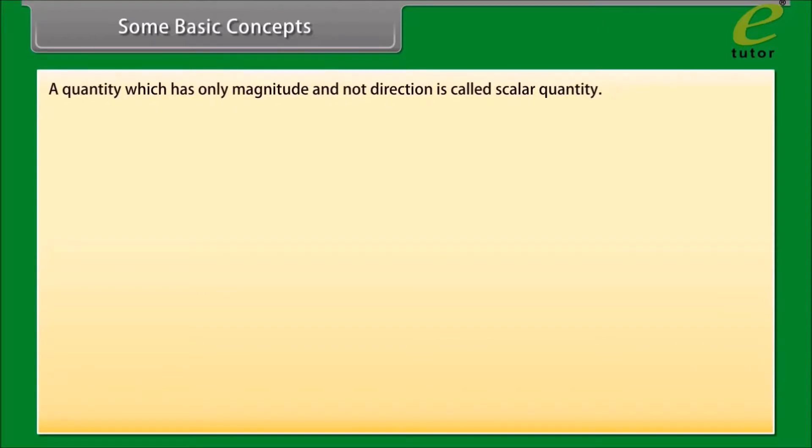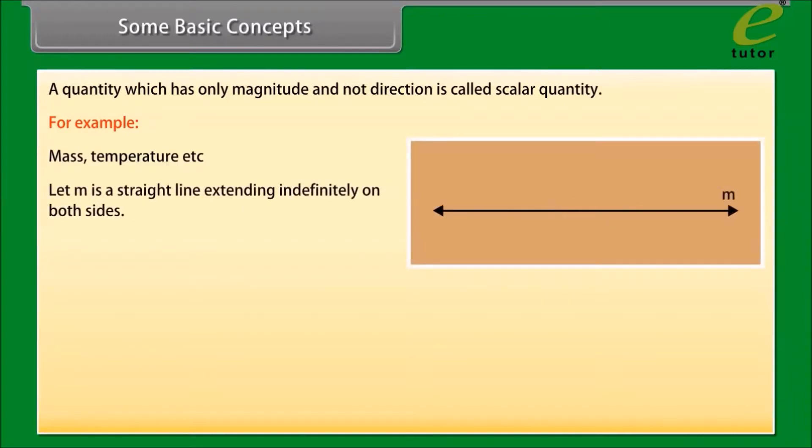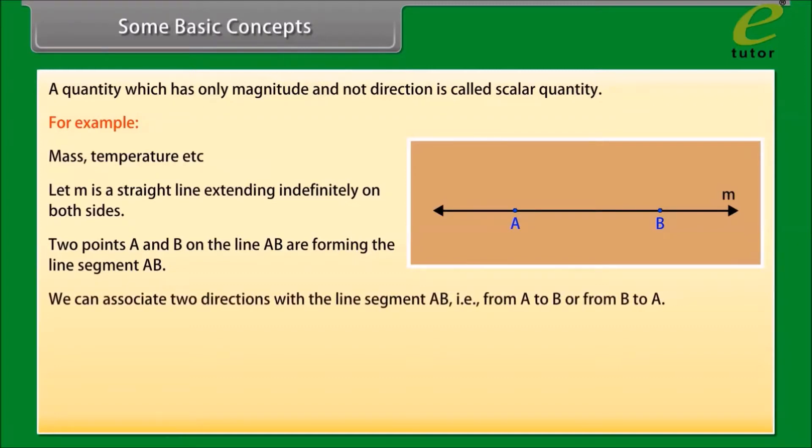Some basic concepts. A quantity which has only magnitude and not direction is called scalar quantity. For example, mass, temperature, etc. Let M be a straight line extending indefinitely on both sides. Two points A and B on the line AB are forming the line segment AB.